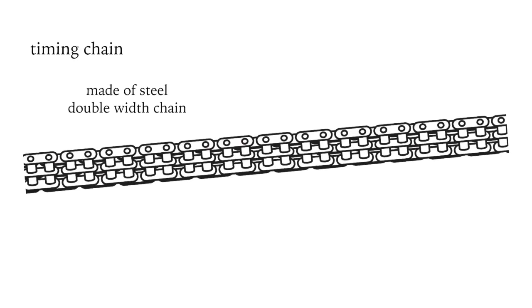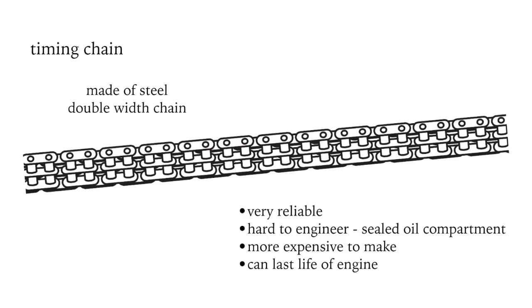Timing chains are also robust like timing gears and also need lubricating. They tend to be quieter than timing gears and are more flexible in terms of where the camshaft and injection pump are located.